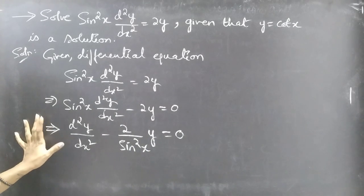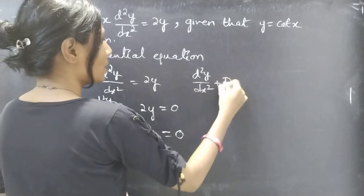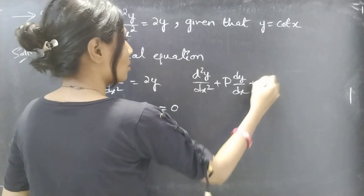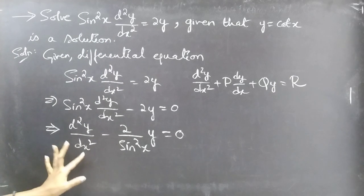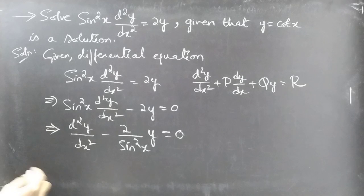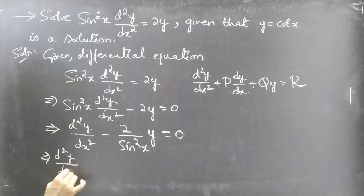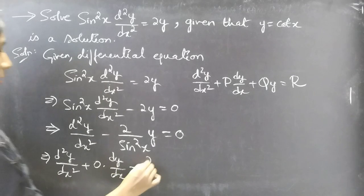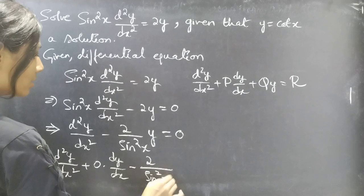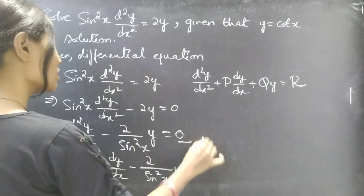Now let's write this differential equation in standard form: d²y/dx² + P·dy/dx + Q·y = R. We have d²y/dx² and y but we don't have the first derivative dy/dx. So we write the equation as d²y/dx² + 0·dy/dx - (2/sin²x)·y = 0, adding a dummy term for the missing first derivative.